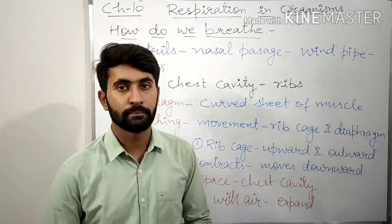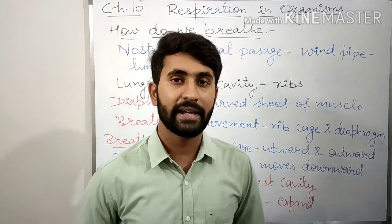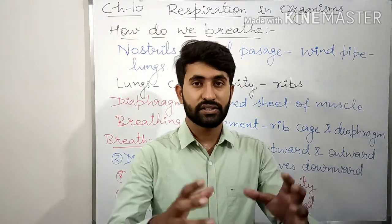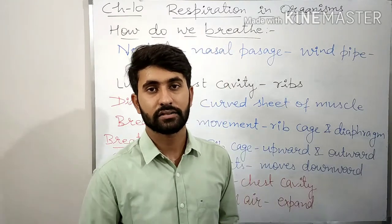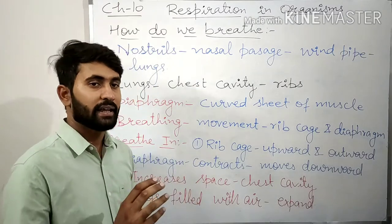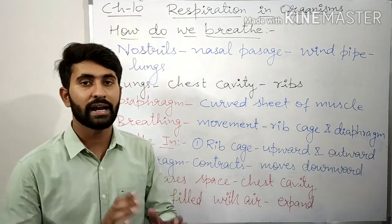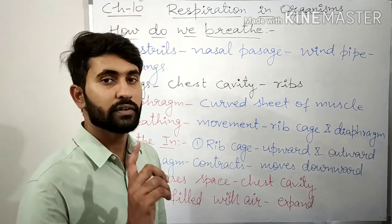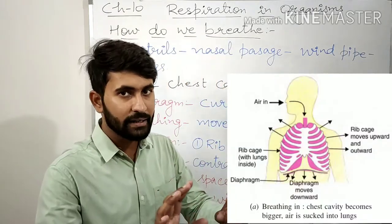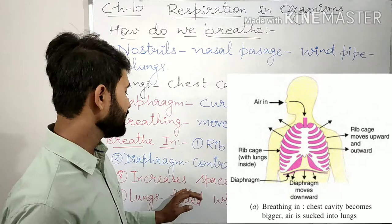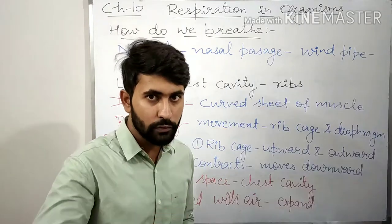Breathing involves the movement of the rib cage and the diaphragm. The rib cage is the structure formed by the ribs in our chest. When we inhale, two things happen at the same time: the rib cage moves upward and outward, and the diaphragm contracts and moves downward.